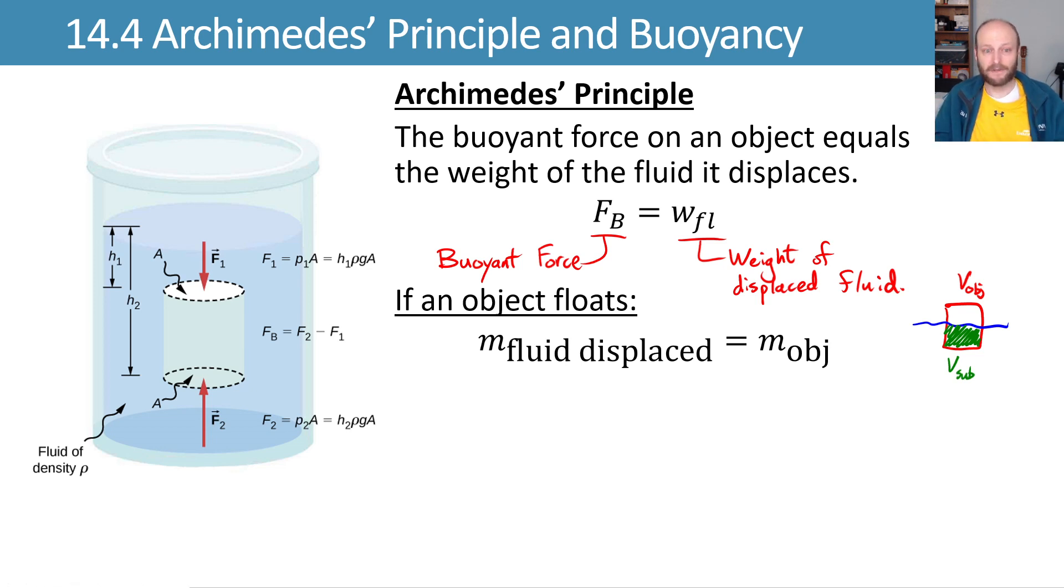We know these masses are equal if our object is floating. We can now try and figure out how high do things float in the water? What fraction of the object is going to be submerged?